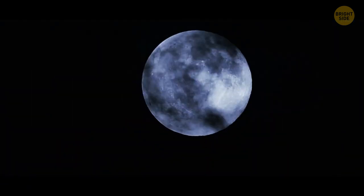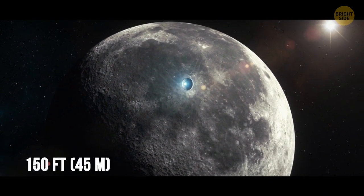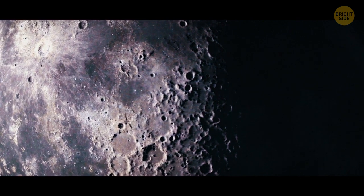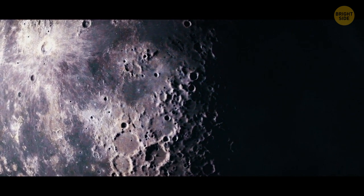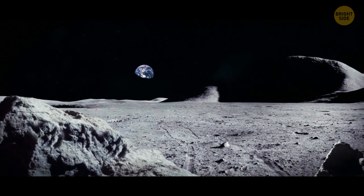The Moon seems to be shrinking. Earth's natural satellite is now 150 feet smaller than it used to be hundreds of millions of years ago. The reason for this phenomenon might be the cooling of the Moon's insides. It could also explain the quakes shaking the surface of our planet's natural satellite.